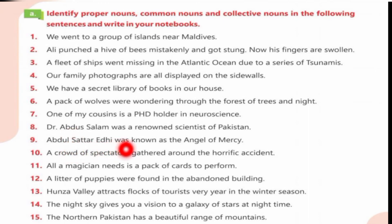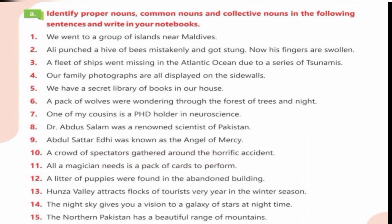Abdul Sattar Edhi was known as the angel of mercy. 'Abdul Sattar Edhi' is a proper noun. 'Angel' is a common noun. A crowd of spectators gathered around the horrific accident — 'crowd of spectators' is a collective noun. All our magicians need is a pack of cards to perform — 'pack of cards' is a collective noun and 'magicians' is a common noun.